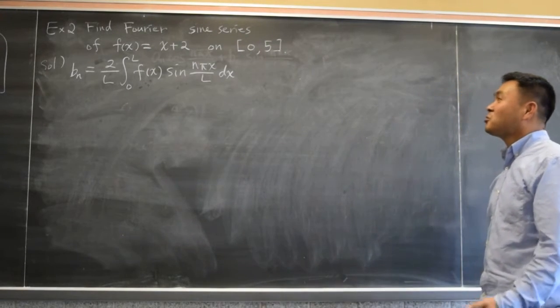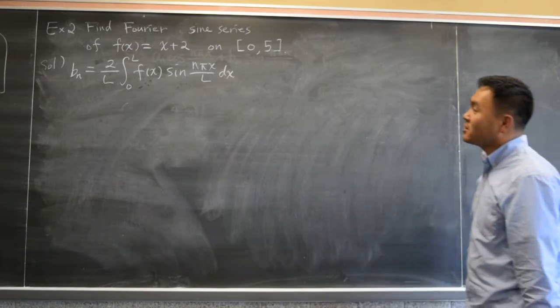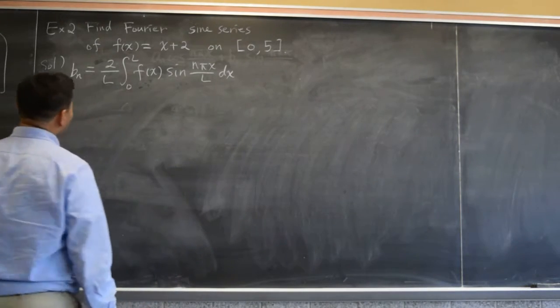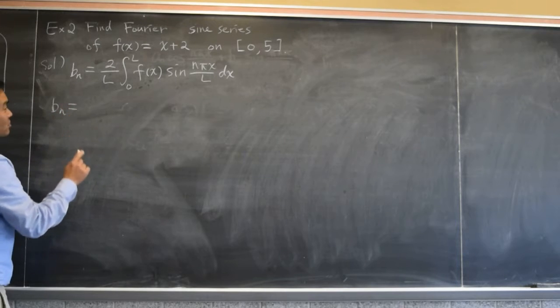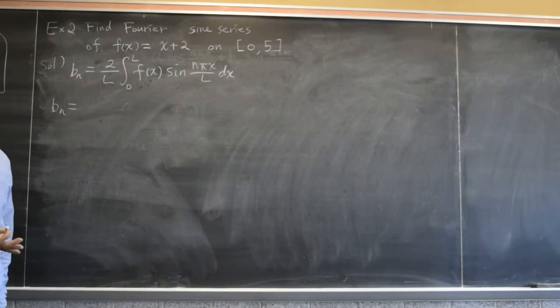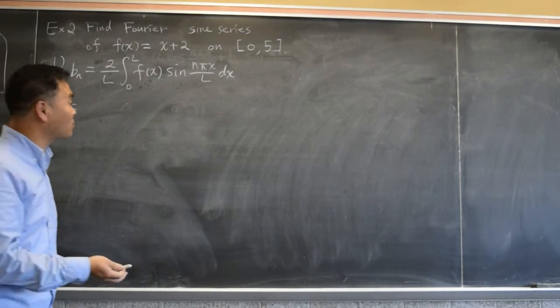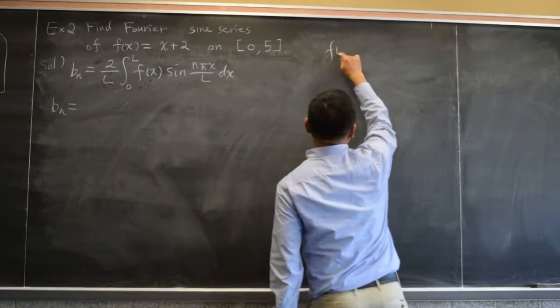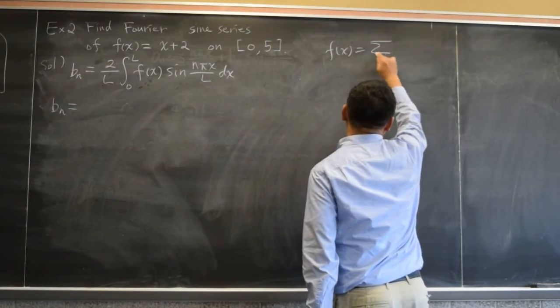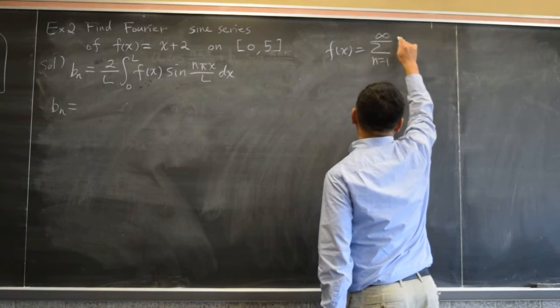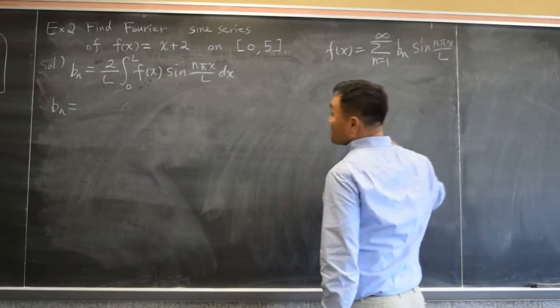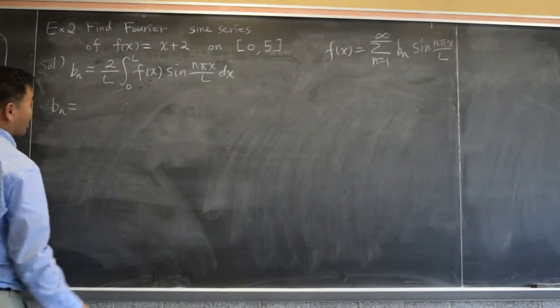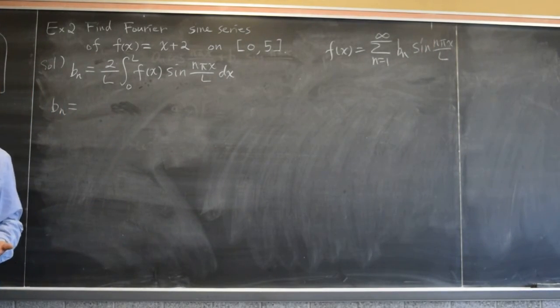All right, so this time let's try to find the sine series. For the sine series, you have to use this formula. And by the way, for the sine series, you don't need to calculate b0. There is no b0 in the formula. f of x in the sine series is simply sigma n from 1 to infinity of bn sine n pi x over l. So there is no b0 to calculate separately. In some sense, sine series is easier to calculate than cosine series.